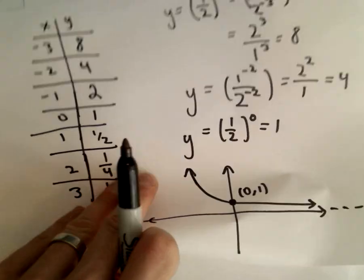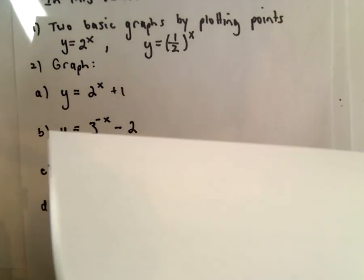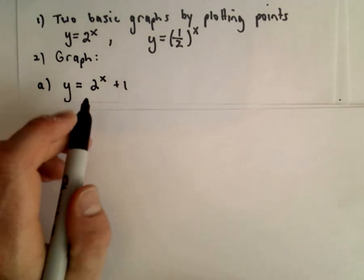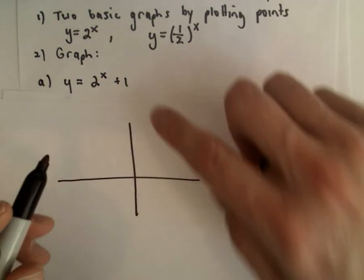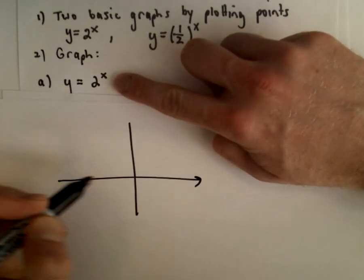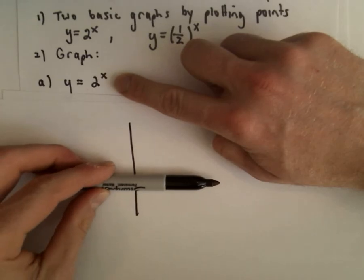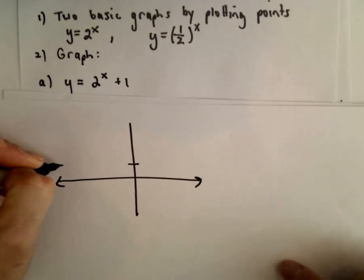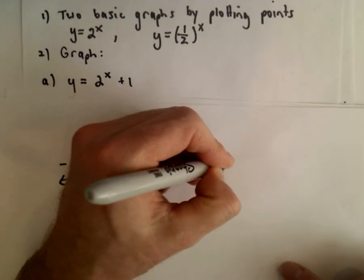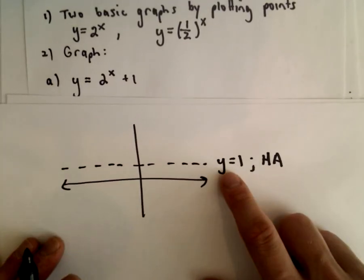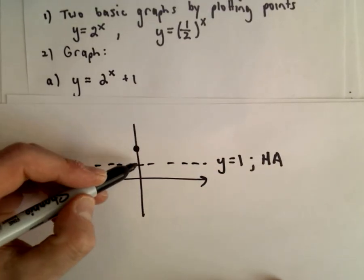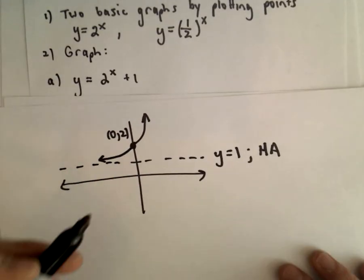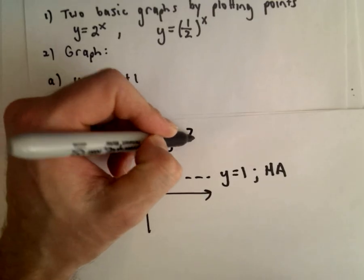Now let's look at ones involving graph transformations. For Y equals 2 to the X, we know that's increasing as you move left to right because the base is bigger than 1, with a horizontal asymptote of Y equals 0. If we add 1 — so Y equals 2 to the X plus 1 — we're just moving the entire graph up one unit. The horizontal asymptote moves to Y equals 1, and instead of going through (0, 1), our Y-intercept will be the point (0, 2), with the same increasing shape.